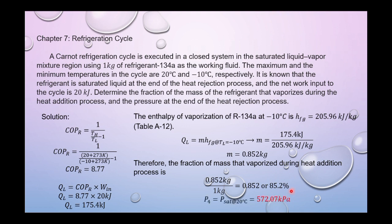Next, to find the pressure, P4 equals Psat at 20°C, which equals 572.07 kPa. We find this in Table A-11 in thermodynamics, which is the pressure at the end of the heat rejection process.